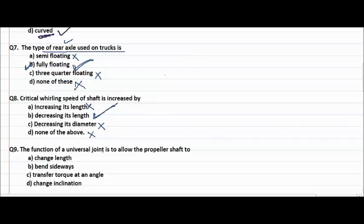Next question, the function of universal joint is to allow the propeller shaft to change length, bend sideways, change inclination, transfer torque at an angle. So universal joint, the function is transferring the torque at a particular angle.